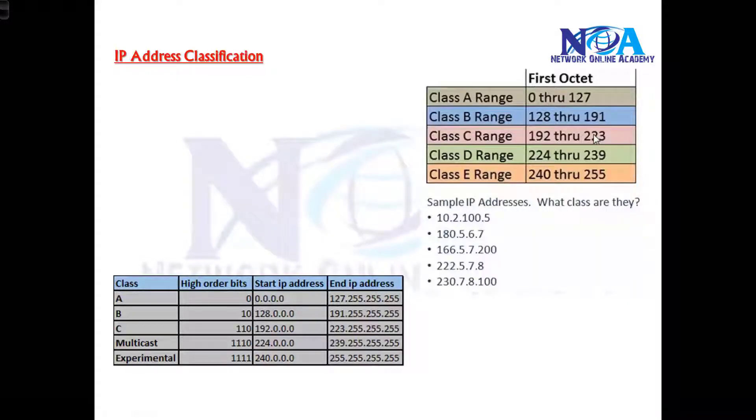This range, the range of addresses from 0 to 255, is further classified into classes. So we have something like ABC classes - ABCDE. So any address in the range of 0 to 127, if you see any address starting from 0 to 127, we need to understand that it is an A class.